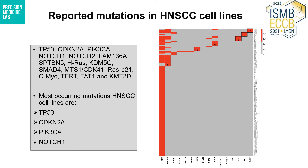For the reported mutations, data was collected from various databases such as the CBIO portal, tumor portal, and many more relevant sources. We found that in the HNSCC cell lines, the most commonly occurring mutations were TP53, CDKN2A, PIK3CA, and NOTCH1. The blocks shown here represent the cell lines that were studied or used in similar studies.